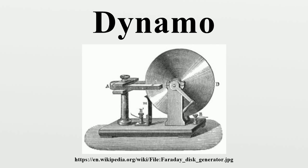Excitation: The earliest dynamos used permanent magnets to create the magnetic field and were referred to as magneto-electric machines, or magnetos. However, researchers found that stronger magnetic fields, and so more power, could be produced by using electromagnets on the stator — called dynamo-electric machines, or dynamos. The field coils were originally separately excited by a smaller dynamo or magneto. An important development by Wilde and Siemens was the discovery that a dynamo could bootstrap itself to be self-excited, using current generated by the dynamo itself, allowing the growth of a much more powerful field and far greater output power.